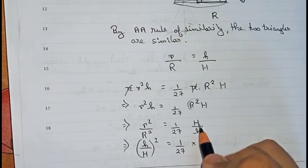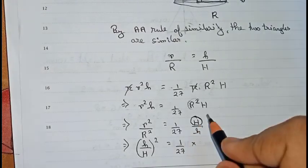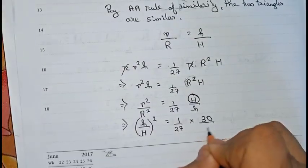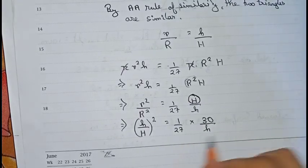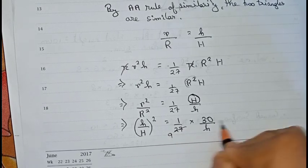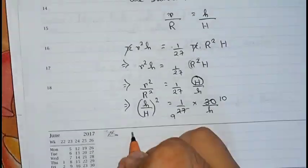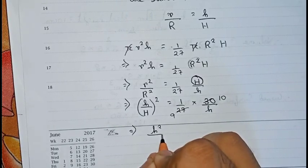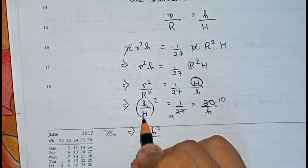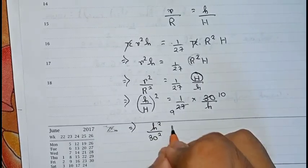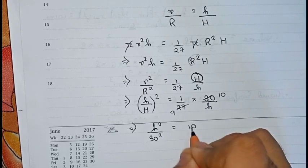Now we substitute the value of capital H as 30 centimeters. We get (30/h)... simplifying 27 and 30 by 3 gives 9 and 10. So we have h² / 30² = 10/9h, and rearranging gives 9h³ = 10 × 30².